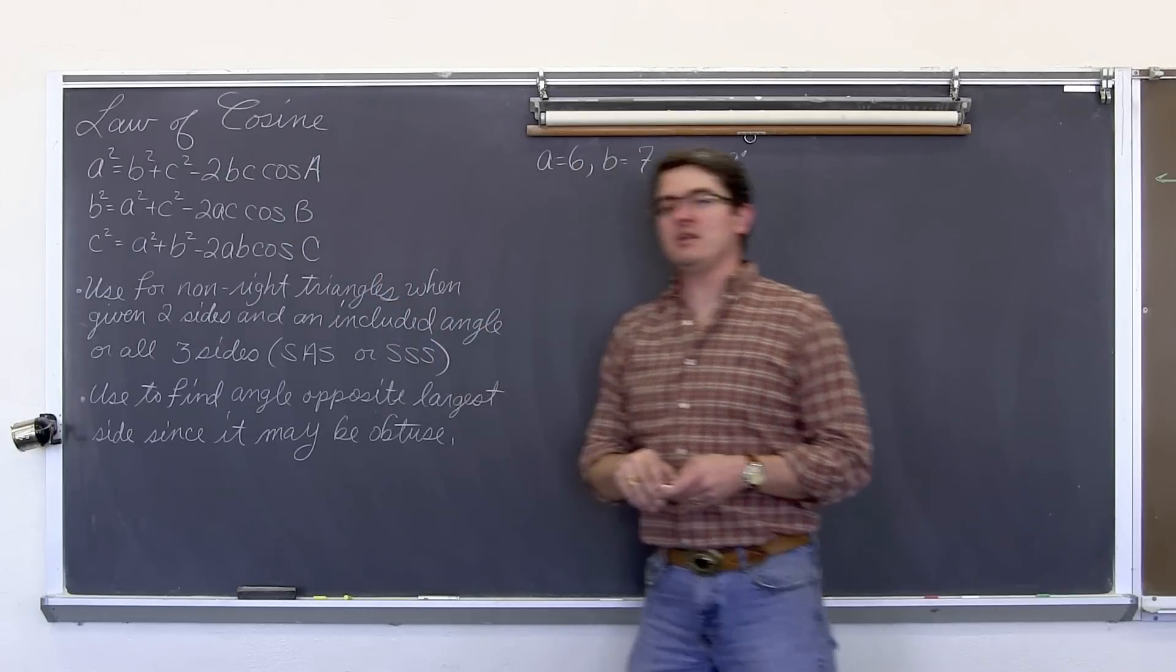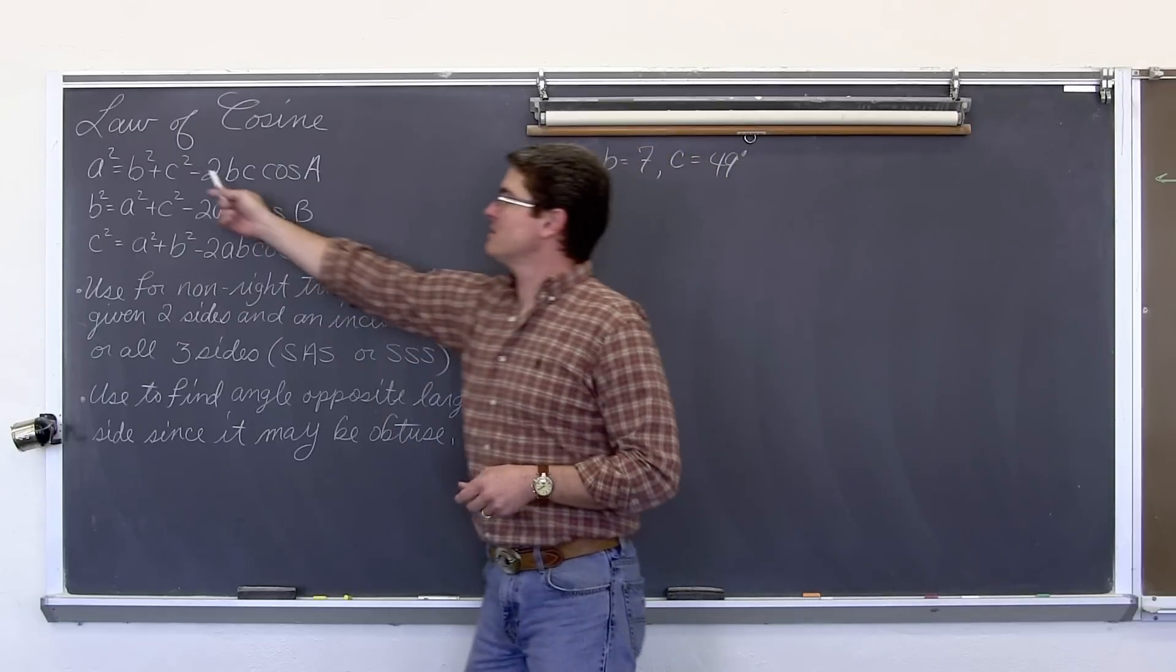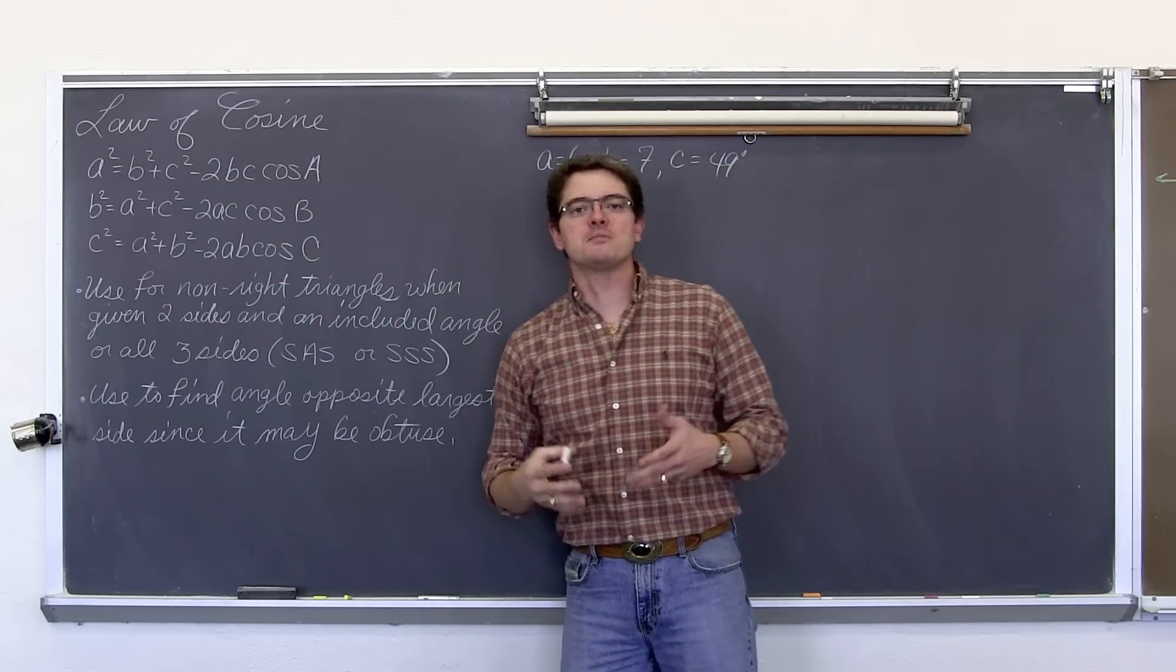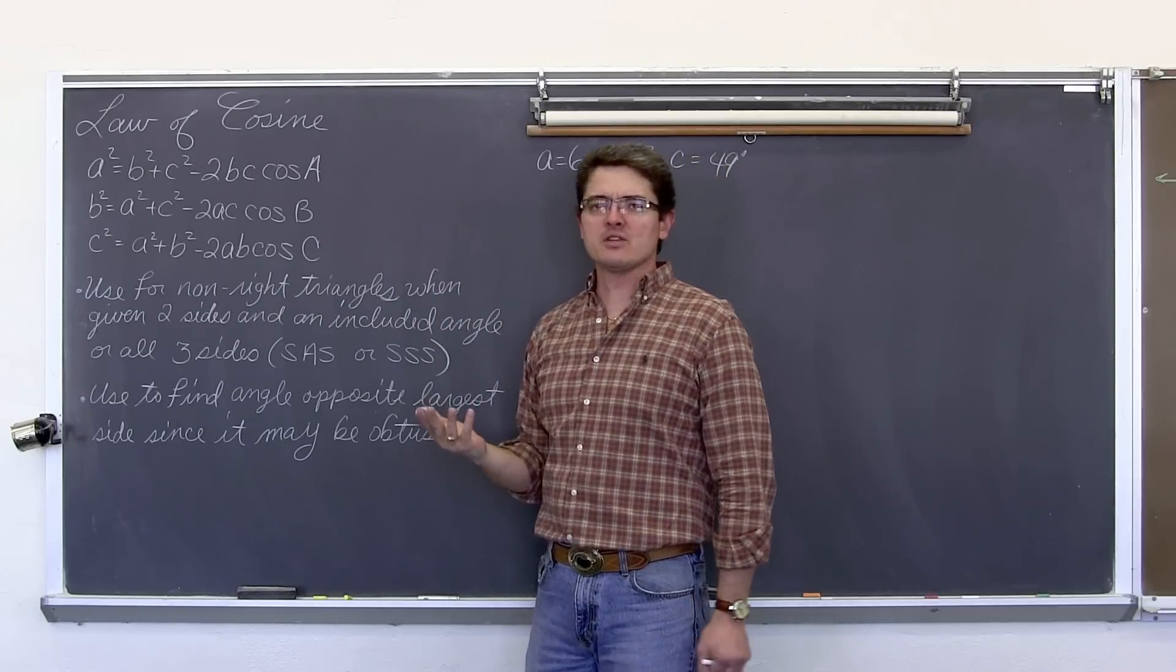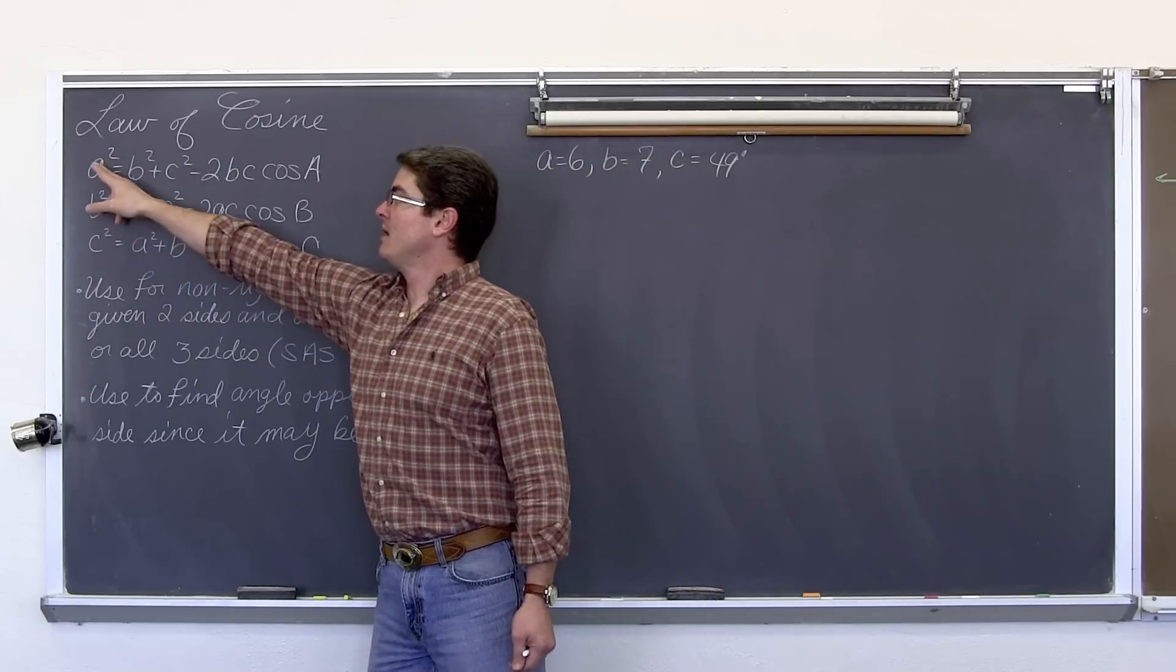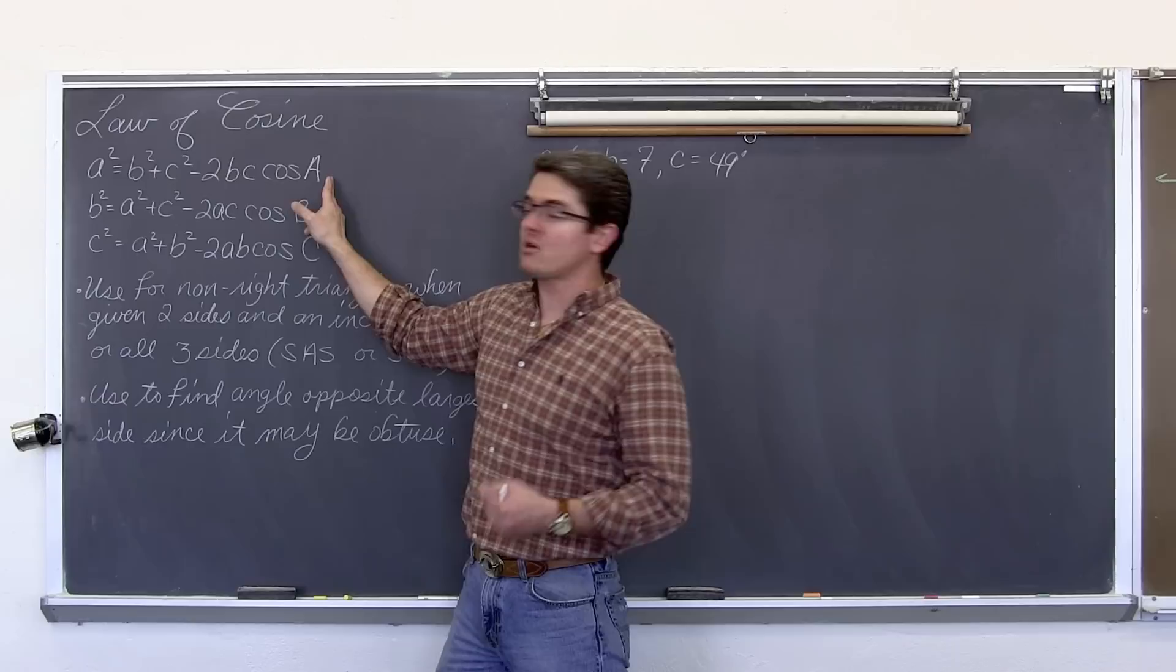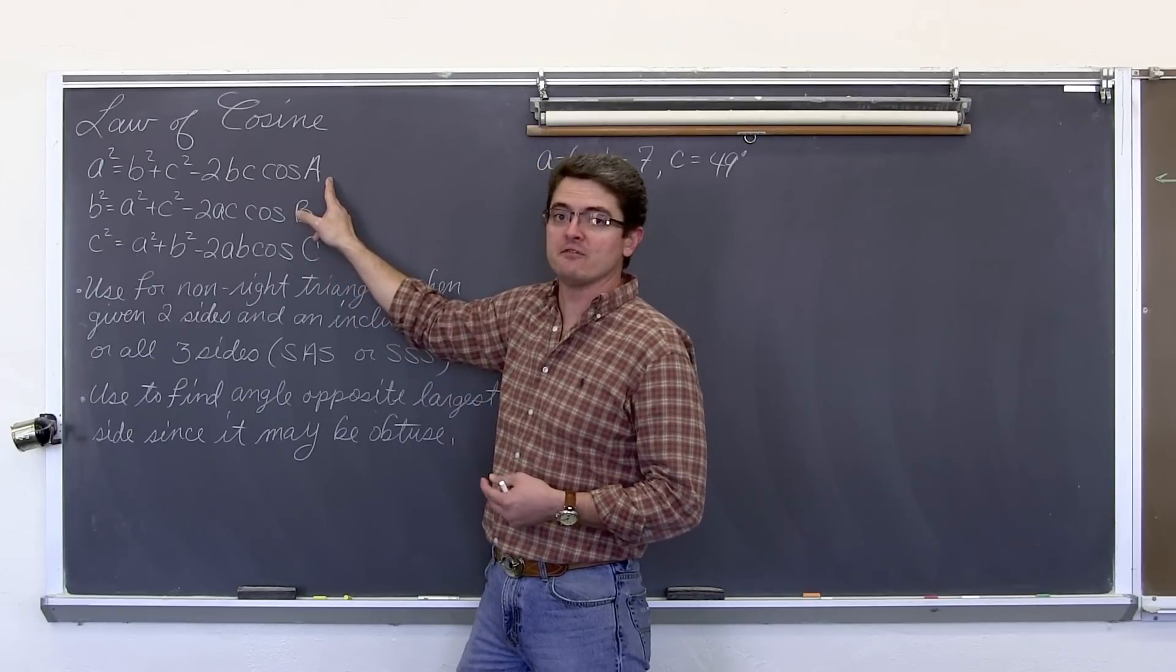We have A squared equals B squared plus C squared minus 2BC times cosine of A. There are three formulas or three forms of this equation but as you can see from the pattern they all pretty much are the same. They are all exactly the same. The letters just move around. Whatever side you are setting the equation equal to, that is what corresponding angle you are going to use in the other side of the equation for the cosine function.